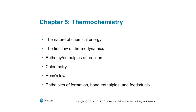Chapter 5 covers the study of thermodynamics and thermochemistry. We talk about the nature of chemical energy, the first law of thermodynamics, enthalpies of reaction, and determining those enthalpies experimentally using calorimetry — the study of temperature changes accompanying chemical reactions. Hess's law is how we put multiple reactions together, following the first law of thermodynamics, which states energy is conserved — neither created nor destroyed.